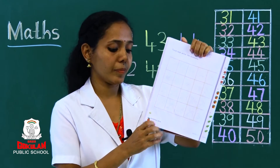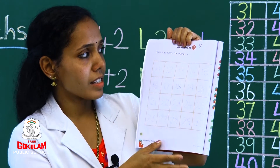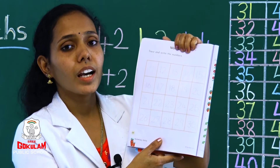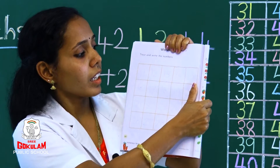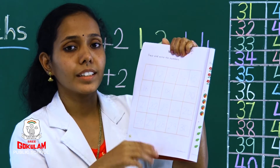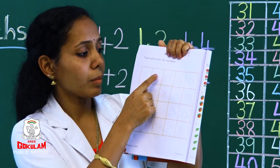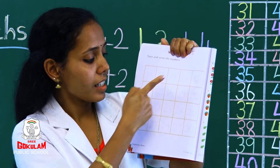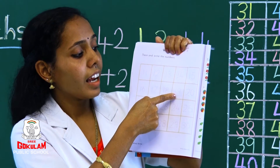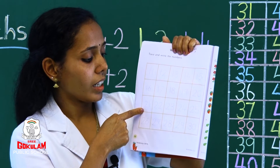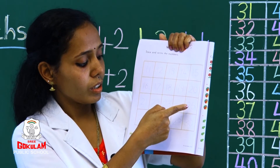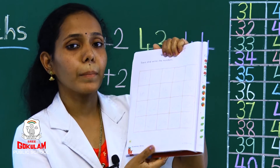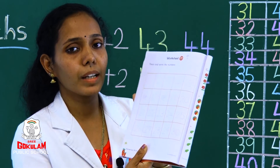Worksheet 19: Trace and write the numbers. We will see the numbers 11 to 30. 23, 24, 25, 26, 27, 28, 29, 30. There are 10 numbers. It's simple.